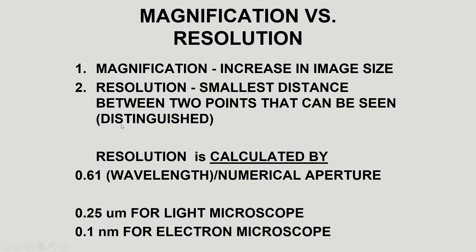What we want to learn is the difference between magnification and resolution. Magnification is simply an increase in image size, whereas resolution is the smallest distance between two points that can be seen or distinguished. We want magnification to be as large as possible, but we also want resolution — the distance between two points — to be as small as possible, and that creates the clearest picture.